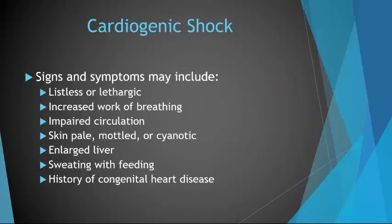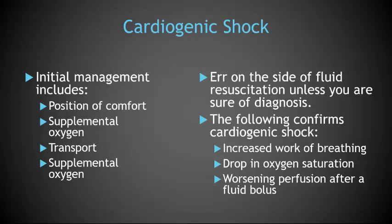Signs and symptoms of cardiogenic shock may include a listless or lethargic appearance, increased work of breathing due to heart failure and pulmonary edema, impaired circulation, mottled or cyanotic or clammy skin, abnormal pulse rate or rhythm, findings of a murmur or gallop, an enlarged liver, sweating with feeding, and history of congenital heart disease. Initial management includes position of comfort, supplemental oxygen, and transportation. Note that supplemental oxygen may not increase saturation in children with particular types of congenital heart disease, and parents are often aware of this fact.